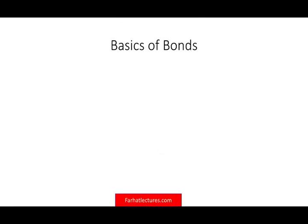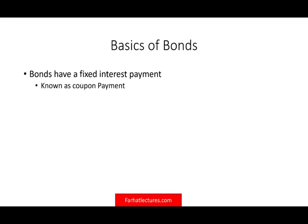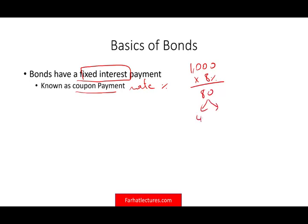Let's do a quick review about the basics of bonds. How do bonds work? If you don't have a good understanding about bonds, please view the prior recording. Bonds have a fixed interest payment called the coupon payment. When you buy a bond, you are promised a fixed amount of money based on this coupon. They give you a coupon rate — a coupon percentage. For example, if you have a bond with a face value of $1,000 and the coupon rate is 8%, that's $80 per year, paid twice a year — $40 every six months.